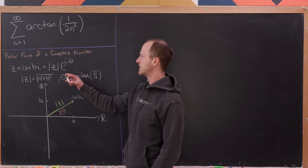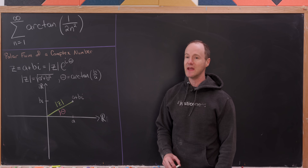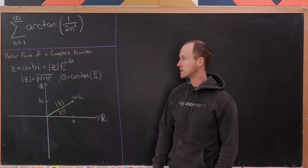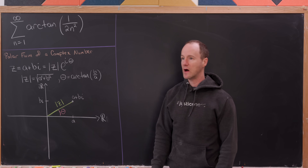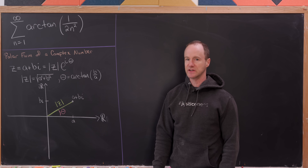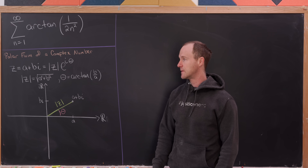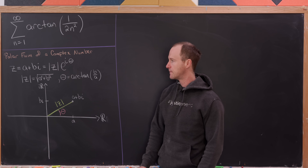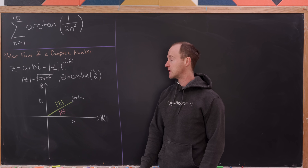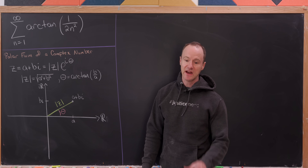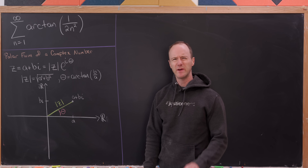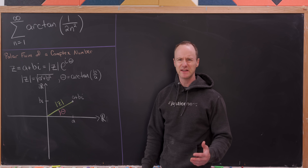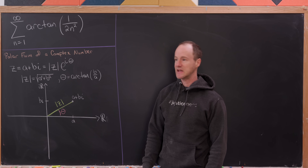If we take z equal to a plus bi — the rectangular form where a and b are real numbers — then we can rewrite it as the modulus of z times e to the i theta, where the modulus of z is equal to the square root of a squared plus b squared. That's the distance z is from the origin, and theta is called the argument. The principal value of the argument is the arctan of b over a, as you can see from standard trigonometry.